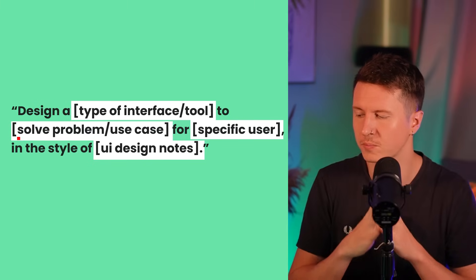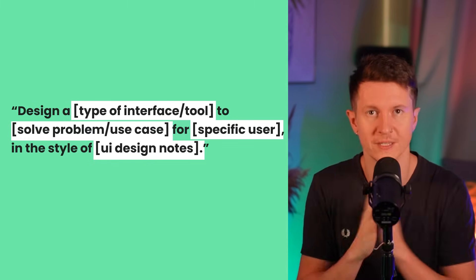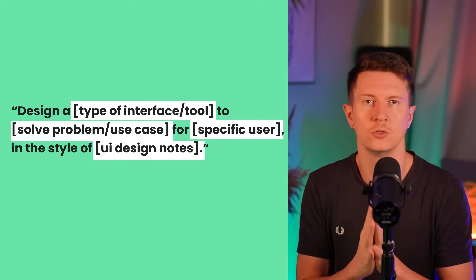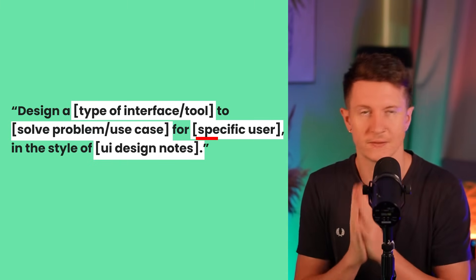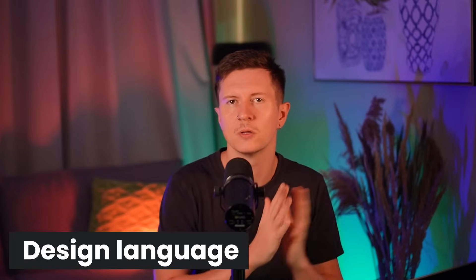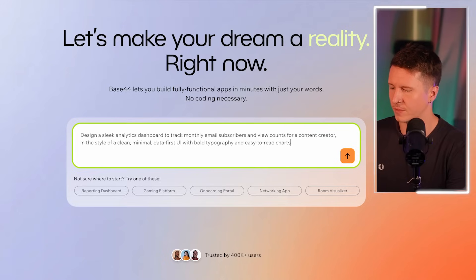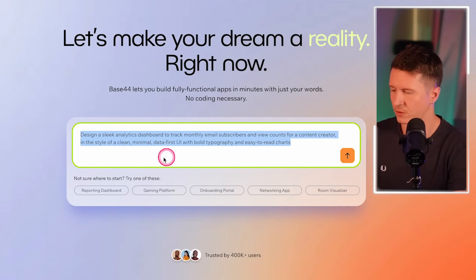Next, you want to label the problem it is aiming to solve — this is the function of your app. For me, it's a dashboard to showcase email subscribers and views per month. Then you want to name the specific user, so this is a creator dashboard. Then you get to define the style — using different types of design language, for example sleek and minimal, or dark mode, or even replicating the style of an existing brand like Google's material design or Apple iOS. I've taken this prompt formula and written my very own for my dashboard.